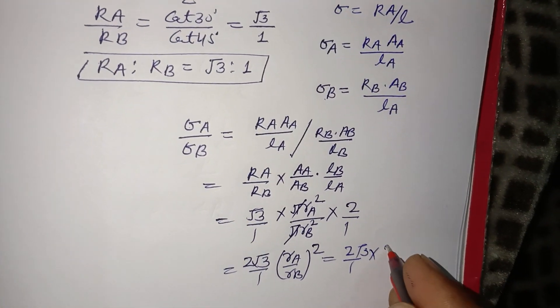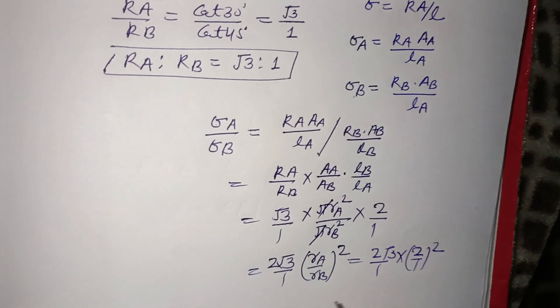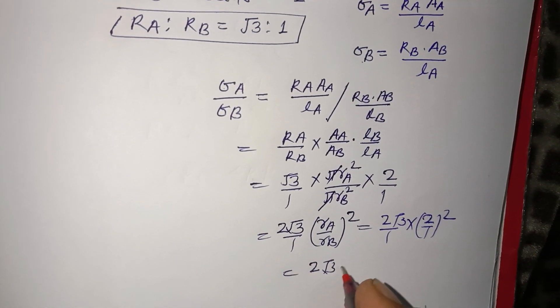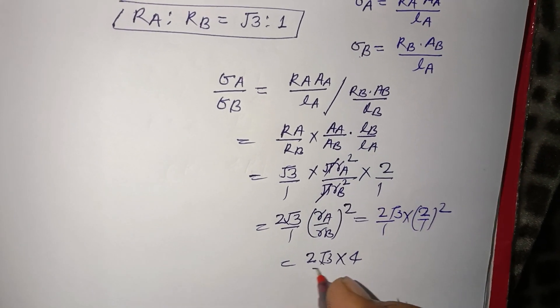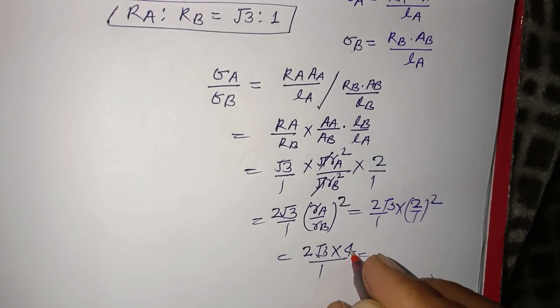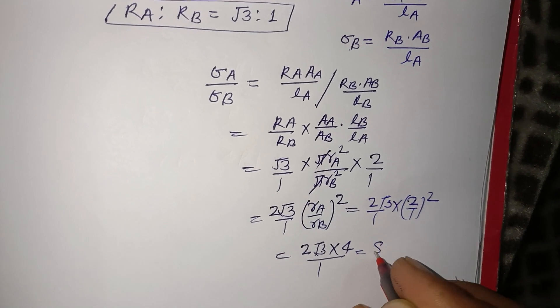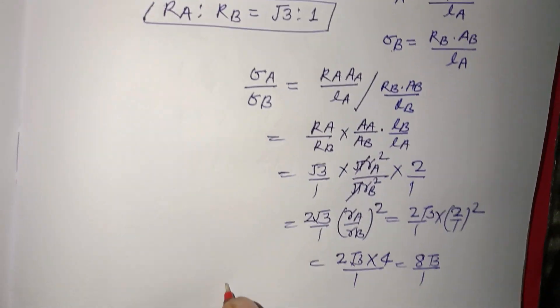So finally, √3 times 2 times (2)² = √3 times 2 times 4 = 8√3. So this is 8√3/1.